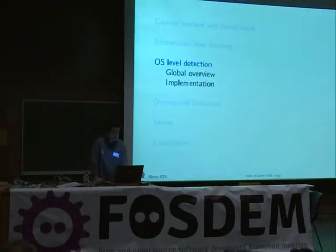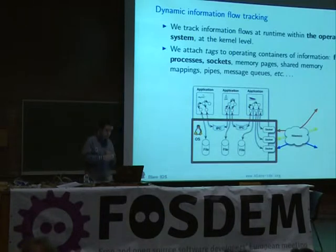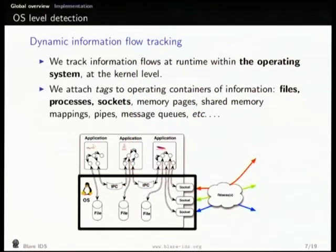Now I'll talk about how we implemented this in the Linux kernel. We track the information flow at runtime — we're inside the kernel, and can only see what the kernel sees. We're in that black square, and we've got all these applications talking with each other, talking on the network, writing to files, and so on. We want to follow all these information flows, but we don't know what happens inside applications themselves.